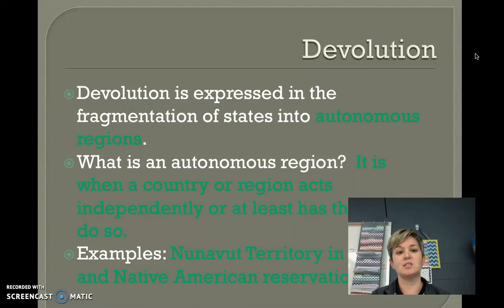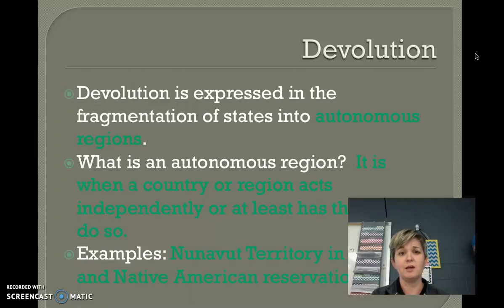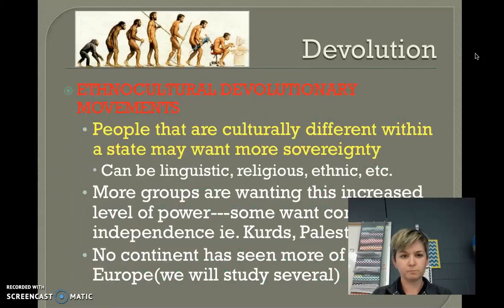Devolution is expressed in the fragmentation of states into autonomous regions. An autonomous region is when a country or region starts to act independently, or at least has the right to do so — they may still be part of that state but start getting some rights and self-determination. Examples include Nunavut territory in far northern Canada, and Native American reservations in the United States, where they don't always follow the same laws and have a completely different police force.